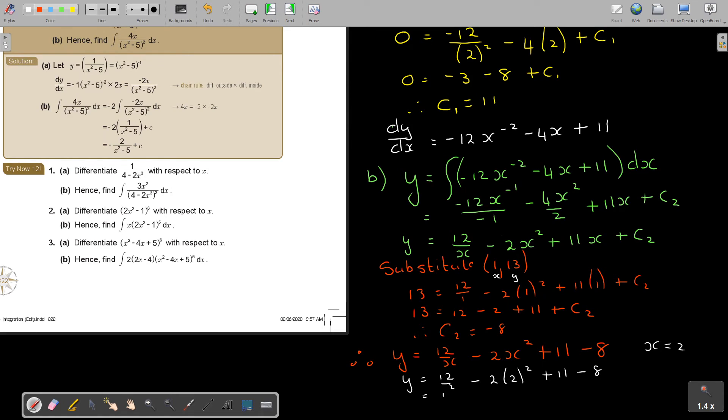So 12 over 2 is 6 minus 4 times 2 is 8 plus 11 minus 8. Let me see if I made a mistake somewhere. I see, I didn't copy it correctly. There it was 11x. Luckily I caught that.